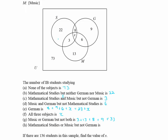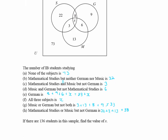Mathematical Studies or Music but not German: we only include the Studies-only region and the Music regions, so that's 22, 3, and 13. We can't include anyone also studying German.